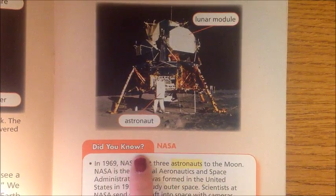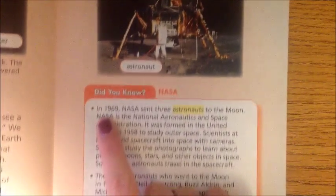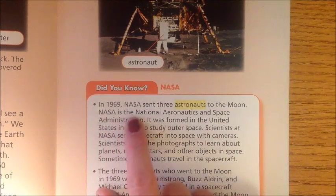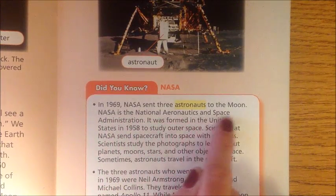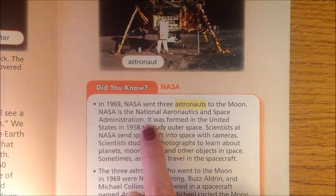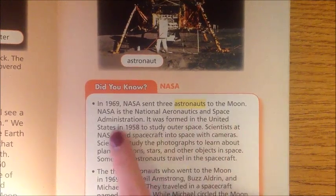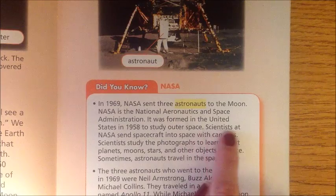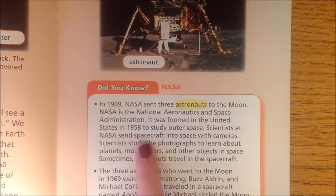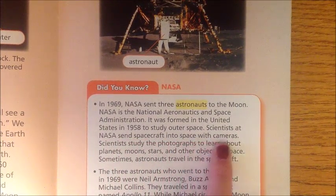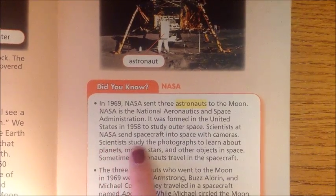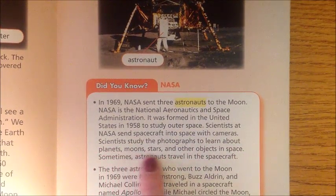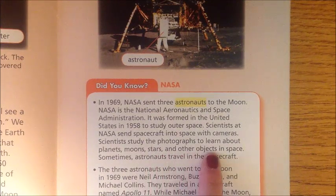Did you know? In 1969, NASA sent three astronauts to the moon. NASA is the National Aeronautics and Space Administration. It was formed in the United States in 1958 to study outer space. Scientists at NASA send spacecraft into space with cameras, and study the photographs to learn about planets, moons, stars, and other objects in space.